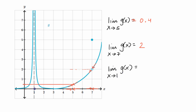Now, what's the limit as x approaches one? From the left-hand side, as x goes 0.9, 0.99, 0.999, 0.99999, it looks like we are going unbounded towards infinity. And as we approach from the right-hand side, the same thing is happening — we are going unbounded to infinity. So formally, even though informally people might say it's approaching infinity, because it is unbounded, we would say that this limit does not exist.